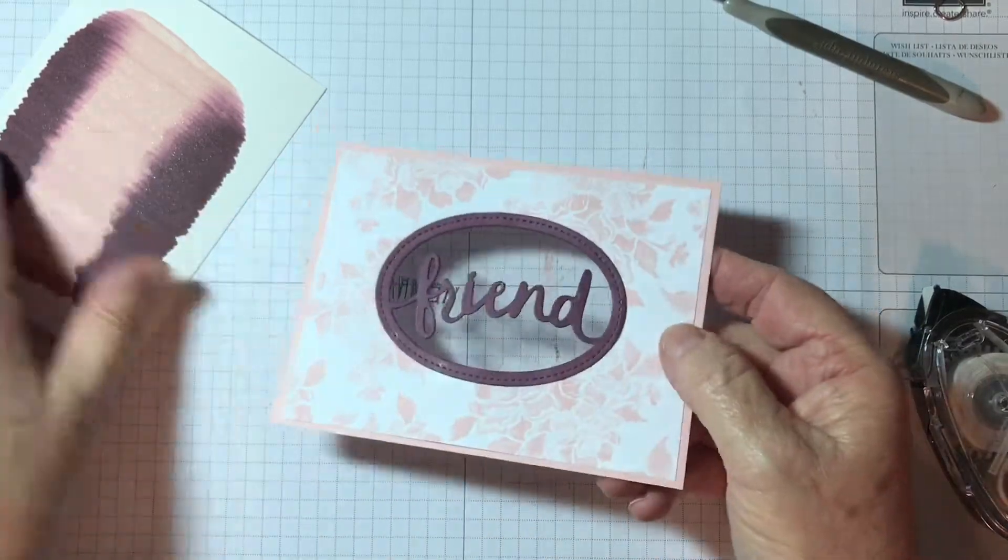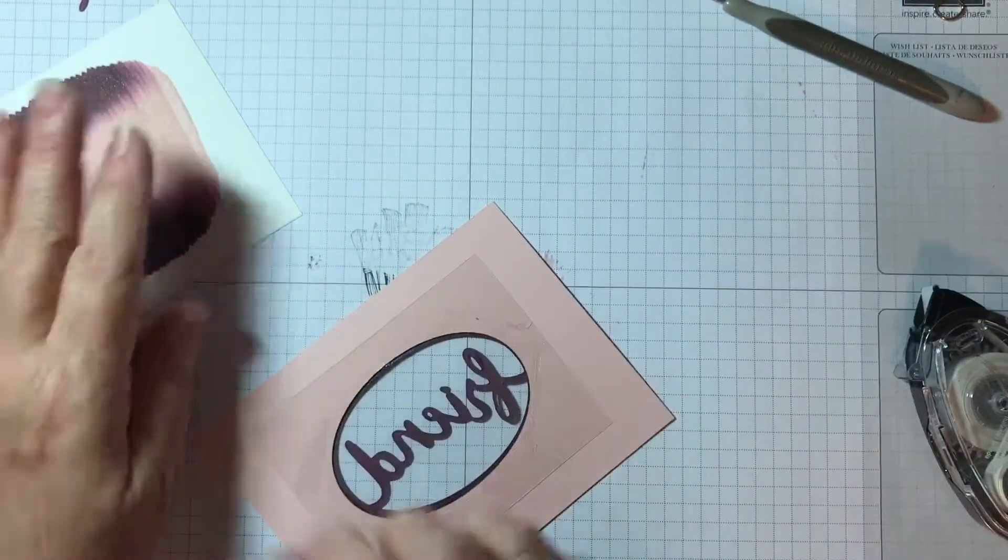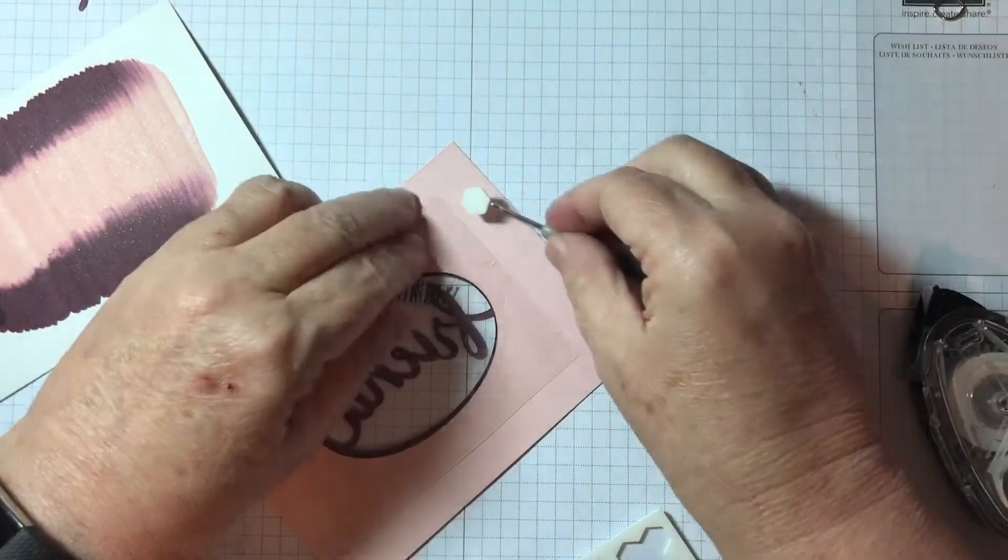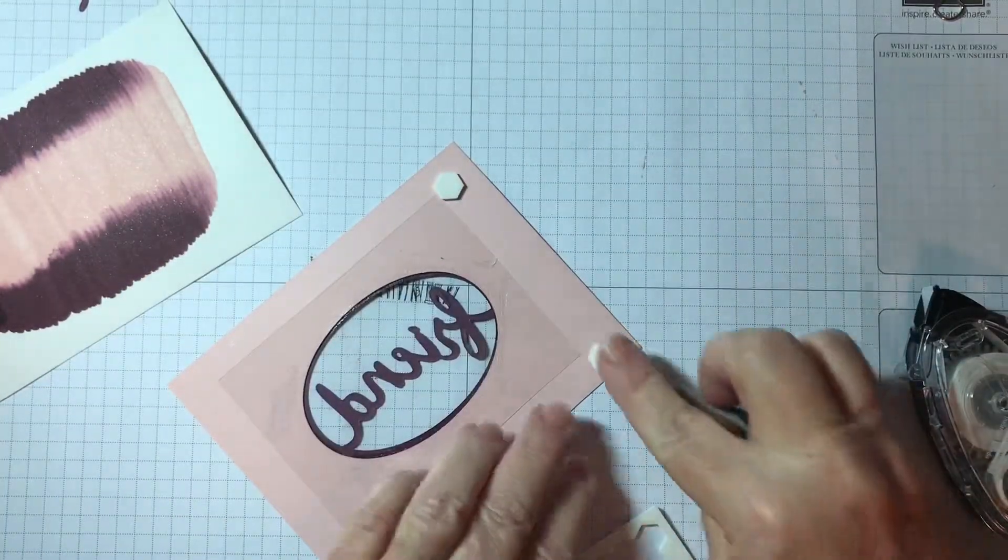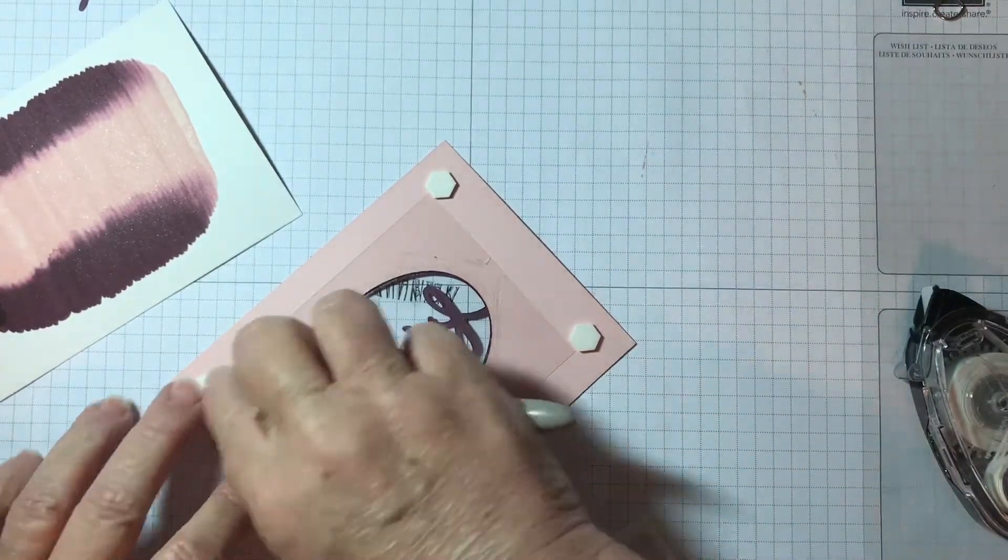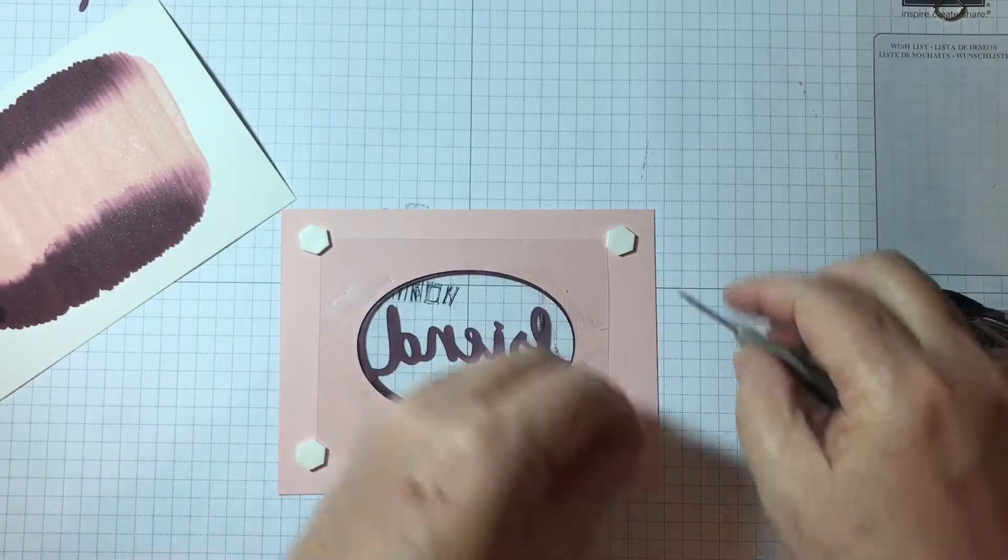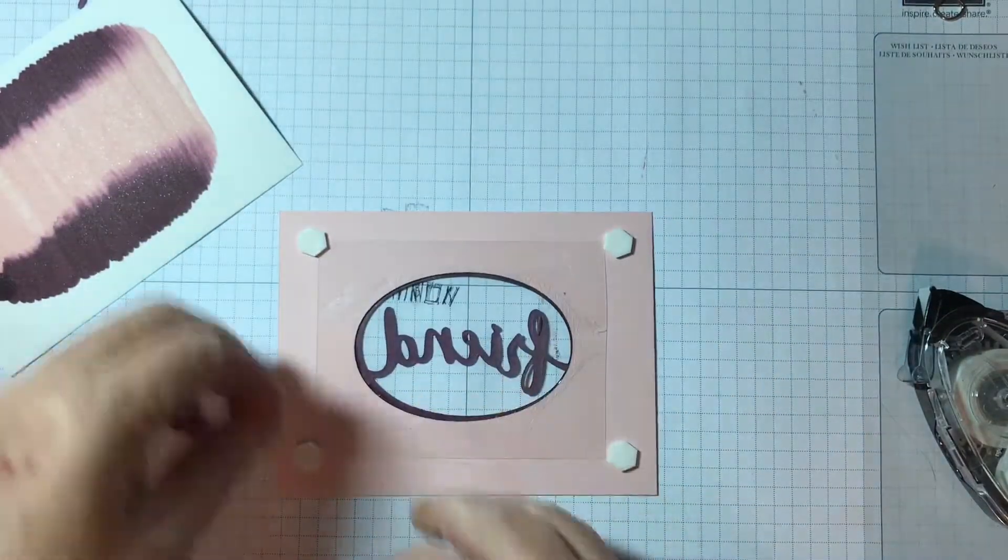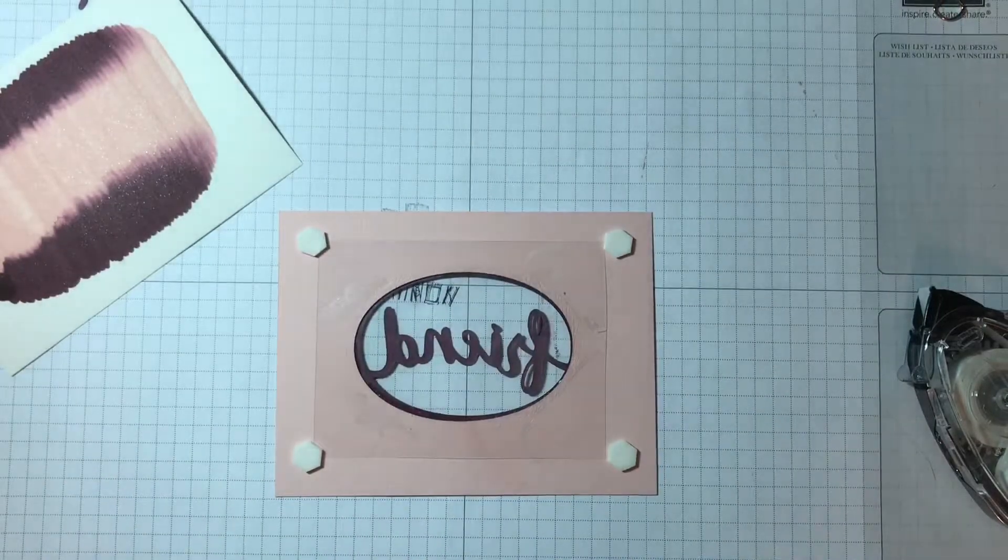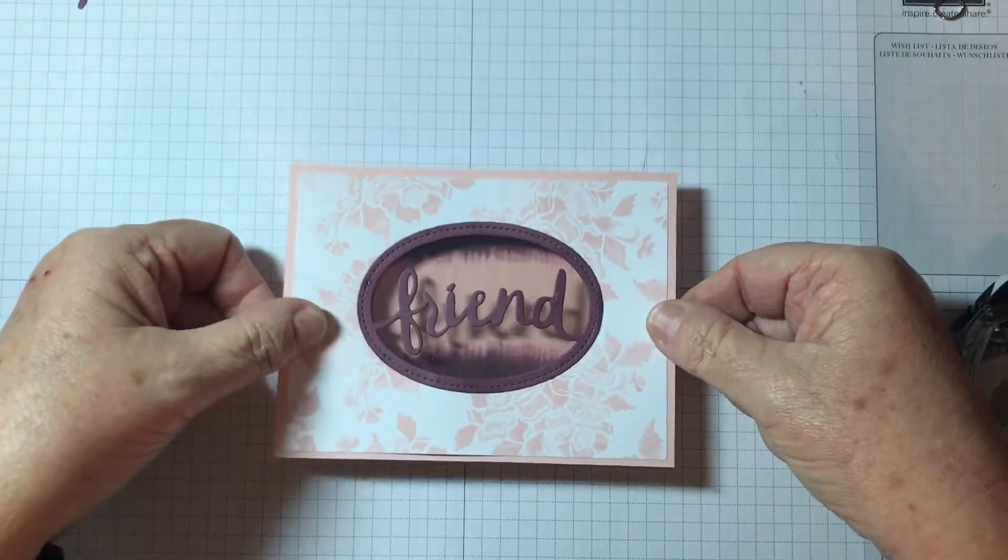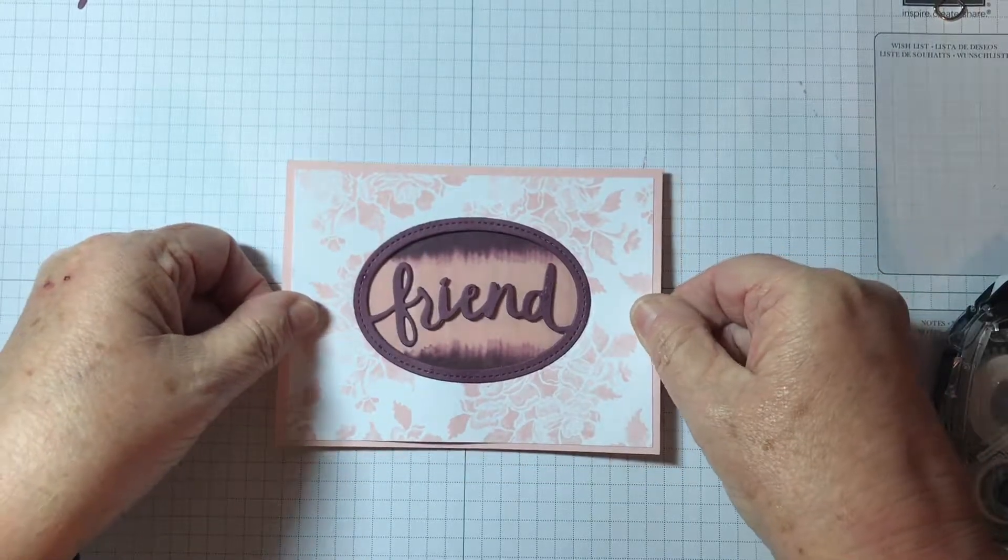And then I will put my window sheet down and that kind of separates it. It makes it so this won't smoosh down. I'm going to mount that with dimensionals. So let's just do one, two, three, four. You know, normally I would put one in the middle, but not tonight. It's not going to work.